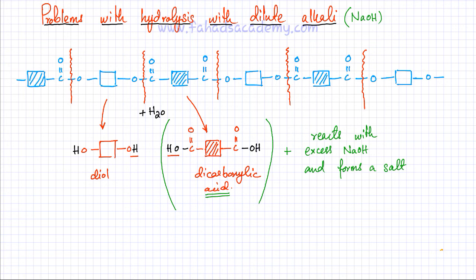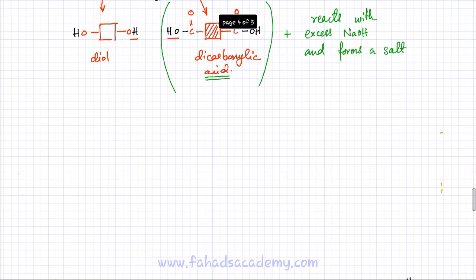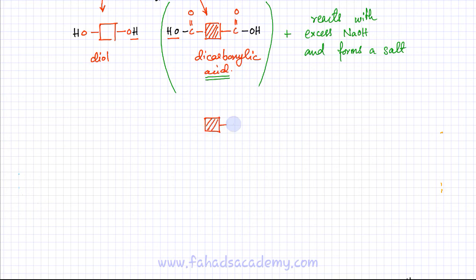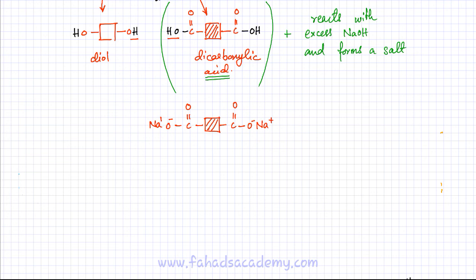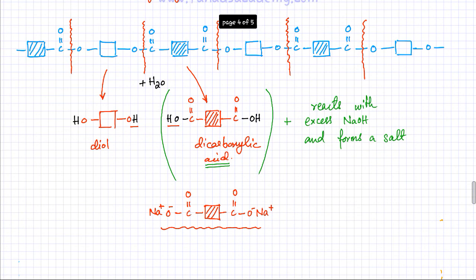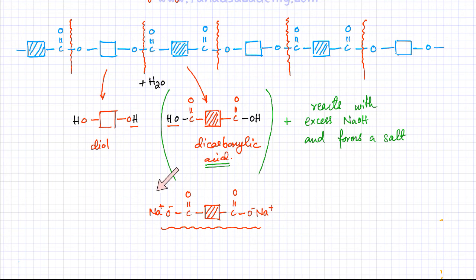Although the carboxylic acid would be formed initially, as soon as it forms it reacts with the excess NaOH to form a salt. If you're using NaOH, a sodium salt is formed; if you use KOH, a potassium salt would be formed. So instead of getting a dicarboxylic acid, you get the salt of that dicarboxylic acid. Remember: when hydrolyzing a polyester with aqueous alkali, do not expect a dicarboxylic acid — you will get its salt instead.